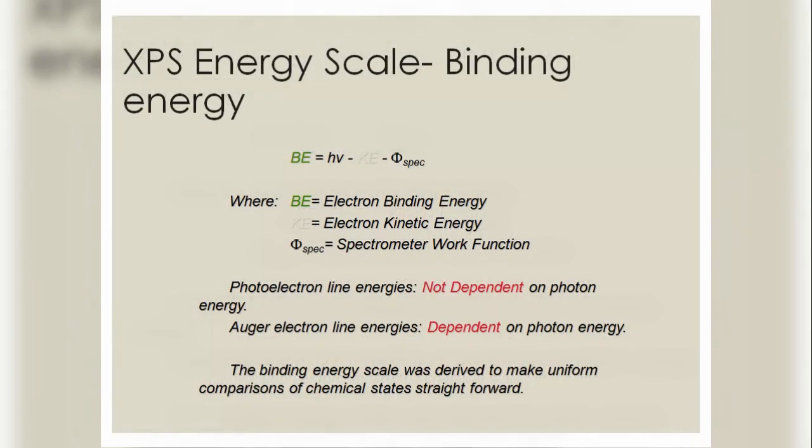So now the XPS energy scale, the binding energy. Both kinetic energy and binding energy have the same relationship and BE = hν - KE - φ_spec where the terms of BE and KE are interchanged.